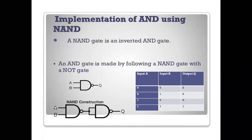AND gate output is multiplication of input A into B. First NAND gate output is A into B bar. Then a second NAND gate with shorted inputs (NOT gate) inverts this: Q = A into B. The bubble bar is cancelled, giving Q = A into B. That is AND gate implemented using NAND gates.